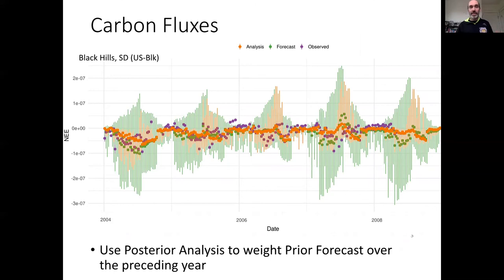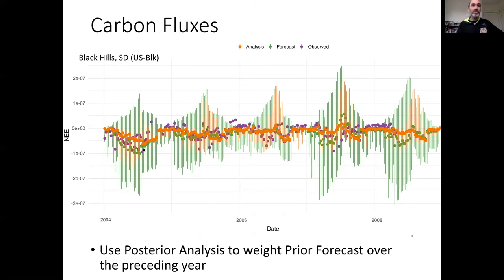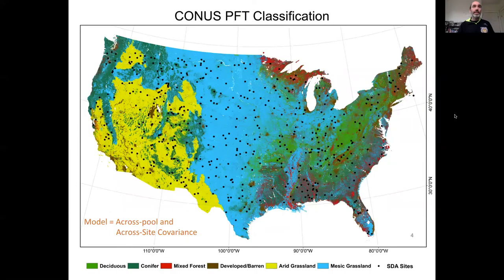We're also able to constrain the fluxes — GPP, NPP, and NEP. We use the posterior analysis at each annual time step to weight the forecast over the preceding year. The analysis is not based on a direct constraint of the flux state; it's a constraint of above-ground biomass and LAI, yet we get a reduction in uncertainty in the carbon fluxes. We're learning about these pools and fluxes both indirectly and directly through observations. The next step was to move this up from individual sites to a larger continental scale.